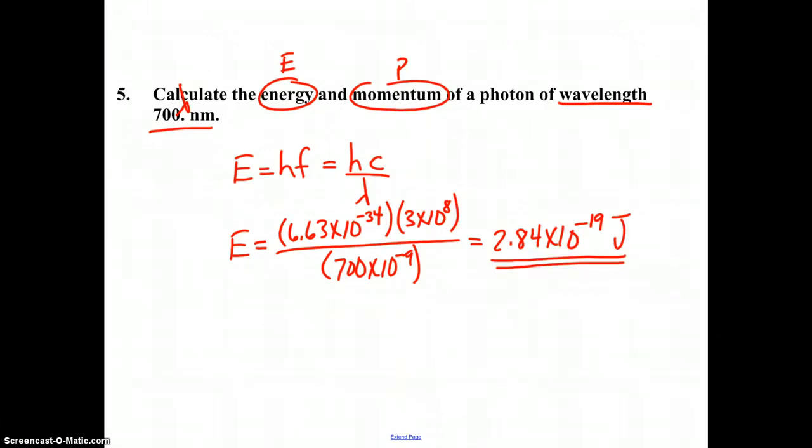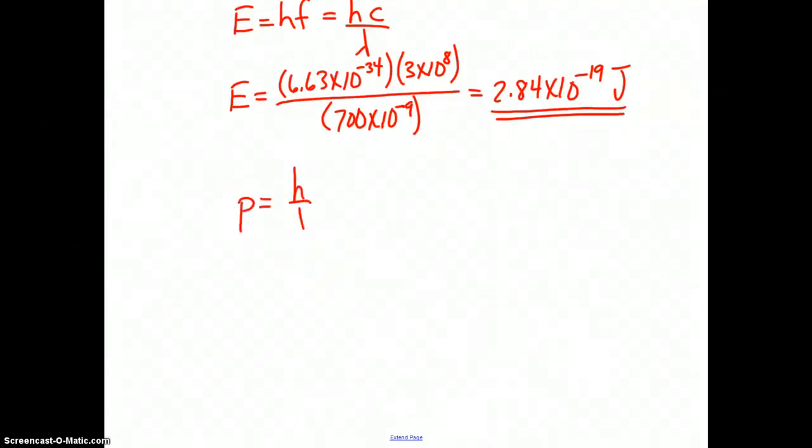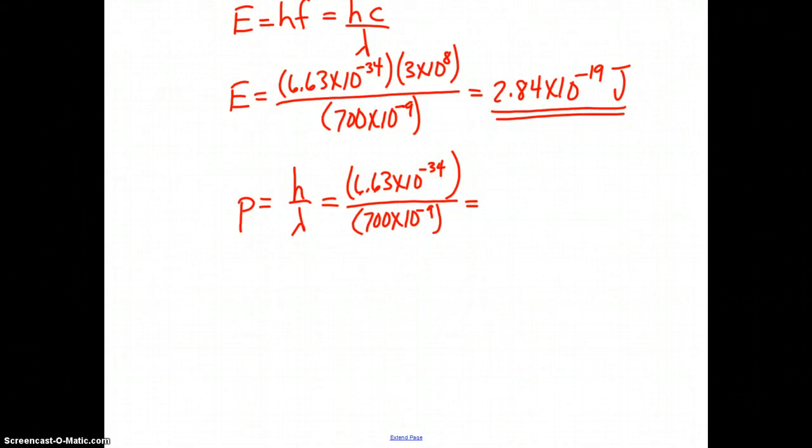Our momentum P equals h over lambda. That's the Compton equation momentum. Whenever we use this, we have to use the joule second form of Planck's constant: 6.63 times 10 to the negative 34 divided by 700 times 10 to the negative 9. That gives us a momentum of 9.47 times 10 to the negative 28 kilogram meters per second. It's because of those units that we have to use the joule second form of Planck's constant. Much more practice to come in the questions we'll do in class, but this will do it for numbers 1, 2, and 5.